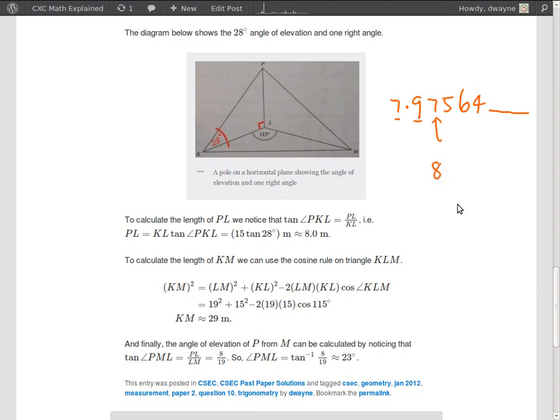Right, but we don't write 8, because that's one significant figure. We've got two significant figures, so you write 8.0. Right, so this is the final answer to that question.